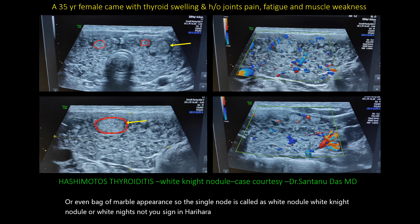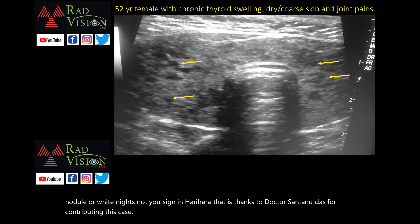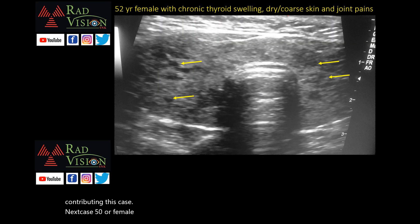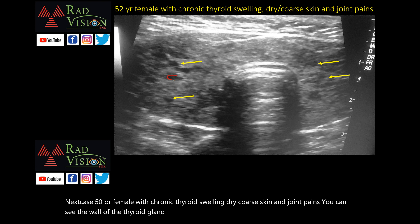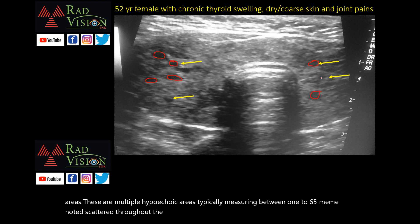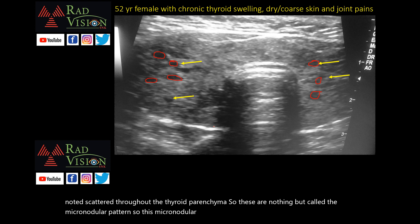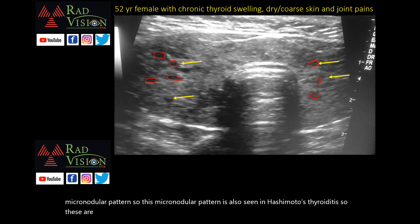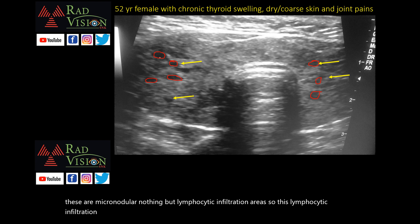Thanks to Dr. Santanu Das for contributing this case. Next case: a 52-year-old female with chronic thyroid swelling, dry coarse skin, and joint pains. The whole thyroid gland is enlarged with multiple hypoechoic areas, typically measuring between 1 to 6.5 mm, scattered throughout the thyroid parenchyma. This is called the micronodular pattern, also seen in Hashimoto's thyroiditis. These micronodules represent areas of lymphocytic infiltration.